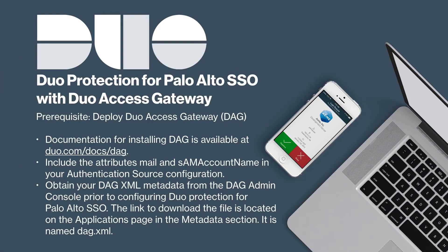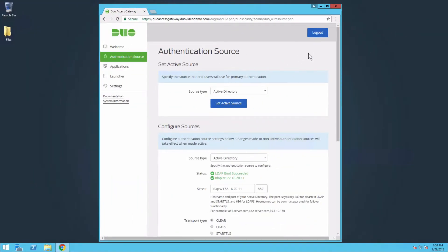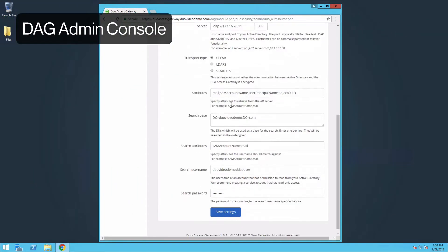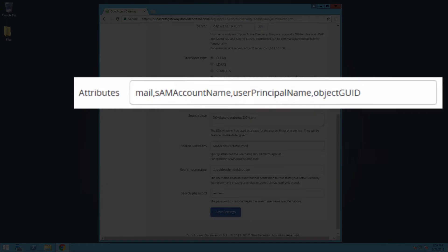This video assumes that you have already deployed Duo Access Gateway, also known as DAG, on a server in your DMZ. The documentation for installing and configuring DAG is available at duo.com/docs/dag. In your DAG authentication source configuration, include the appropriate attributes for your authentication source. Since we are using Active Directory for this video, the attributes are mail and SAMAccountName. If you already have attributes listed in your authentication source configuration, be sure to append any of these two that are not present.